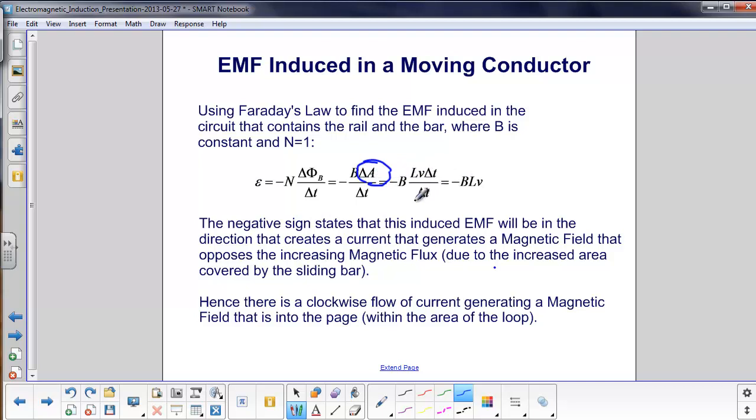So we substitute that in, and quite nicely, the delta T's come out. And we have the EMF induced is the strength of the magnetic field, times the length, which is the vertical height of this combination, and the velocity at which the bar is moving.